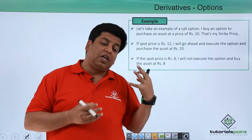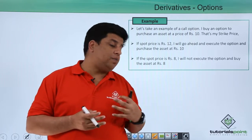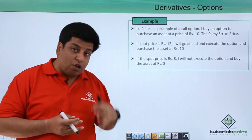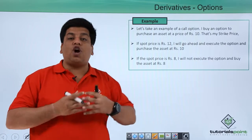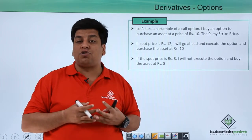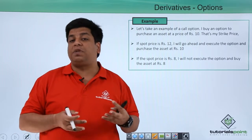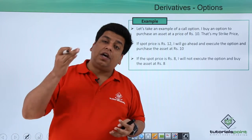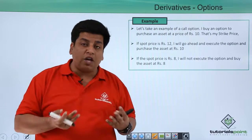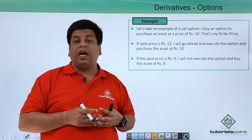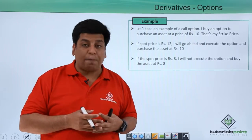But if the spot price is rupees 8 — the current market price at the time of expiration — and I see that the market price is lower than my pre-agreed strike price of 10, then I am not going to execute the option. Why would I purchase the asset at rupees 10 when I can get it from the market at rupees 8? Hence I will not execute the option, and that is the key benefit of this derivative called an option.